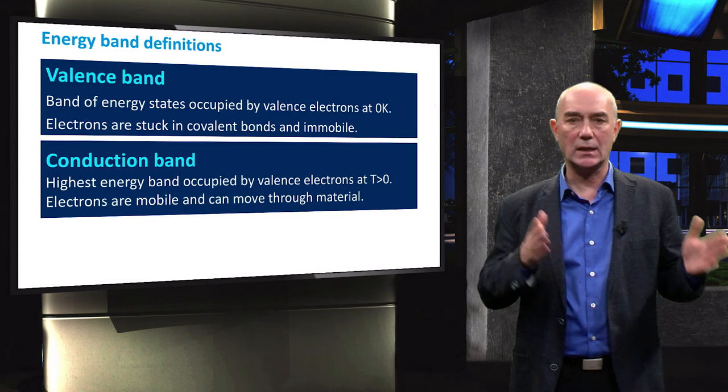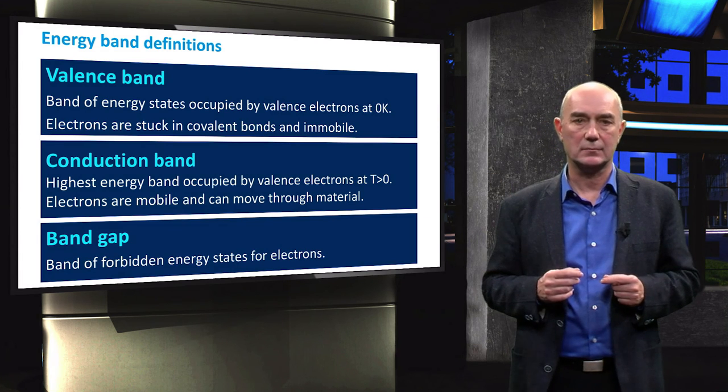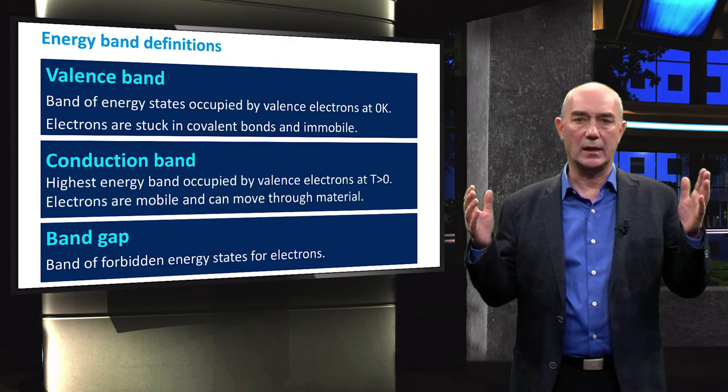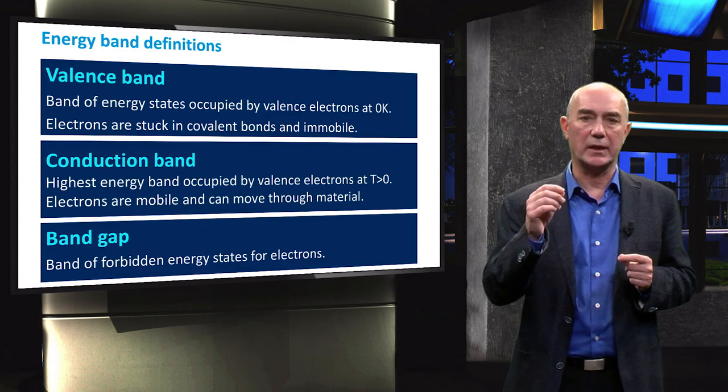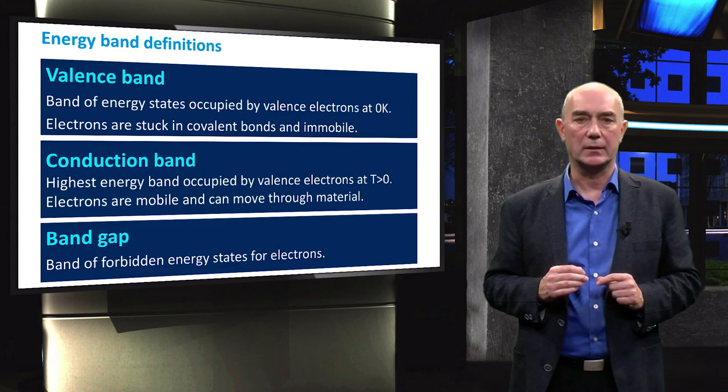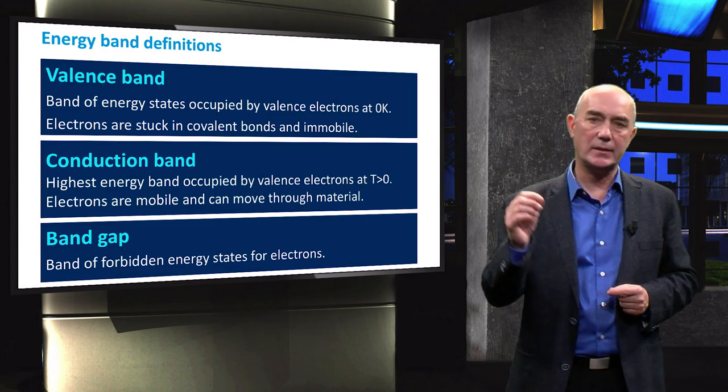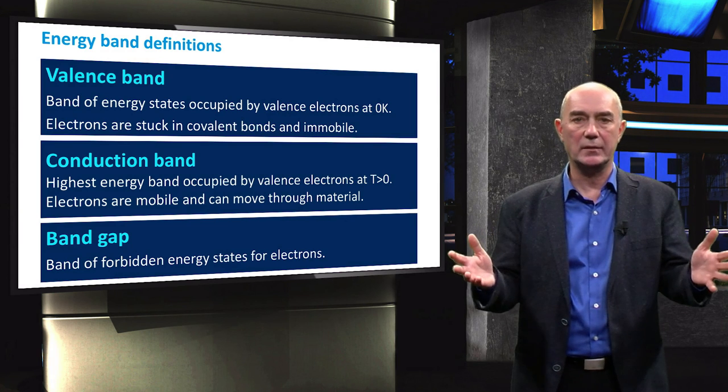The difference between the conduction and valence bands is known as the band gap. There are no energy states available for electrons between the top of the valence band and the bottom of the conduction band. So with these three definitions in mind, let's take a look at what a band diagram looks like.